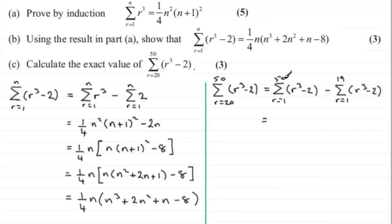So for this first one, n is 50, so we've got one quarter multiplied by 50 and then that is all multiplied by 50 cubed plus 2 times 50 squared plus 50 and then minus 8. So we've got that one and then we've got to subtract.